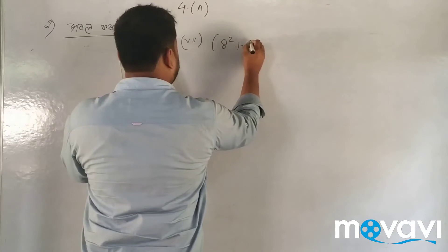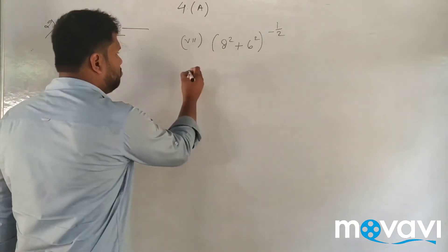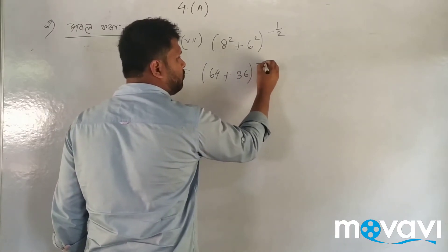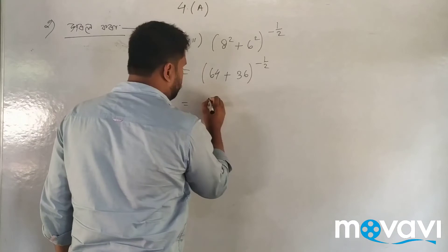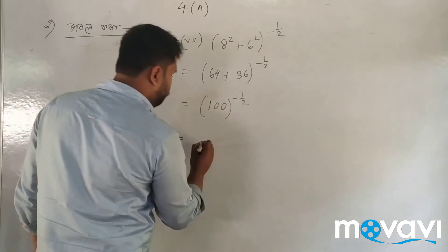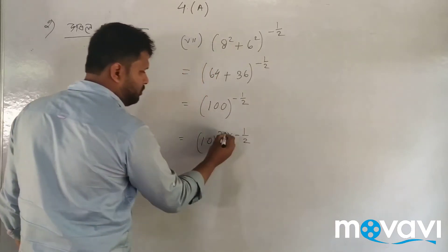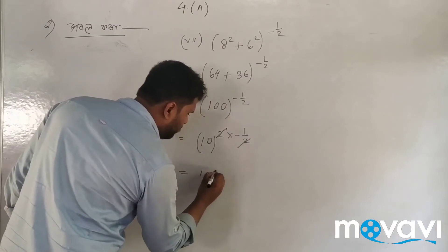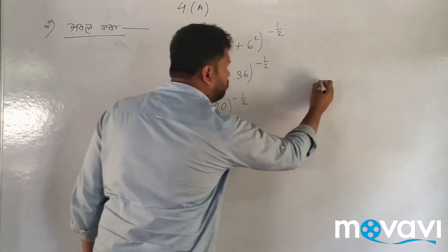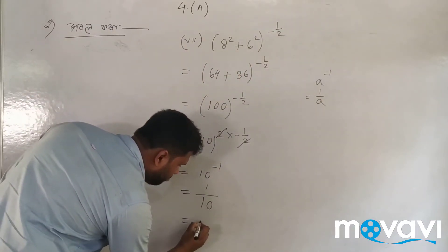Next: 8 square plus 6 square, all to the power minus 1 by 2. So 8 squared is 64, and 6 squared is 36. That gives us 64 plus 36 to the power minus 1 by 2, which is 100 to the power minus 1 by 2. And 100 to the power minus 1 by 2 equals 1 by 10.